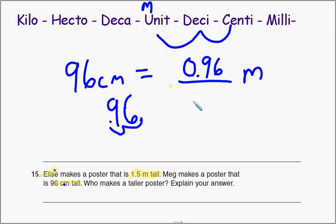So 0.96 meters is less than 1.5 meters. So Elise makes a taller poster because 1.5 meters is greater than 0.96 or 96 hundredths of a meter.